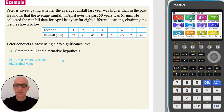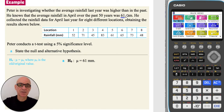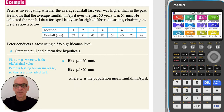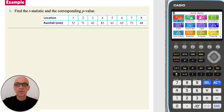When testing the mean of a population, the null hypothesis H0 is that the population mean is the original value — 61 millimeters, as stated in the question. As Peter is investigating whether the average rainfall last year was higher than in the past, he's testing for an increase, so this is a one-tail test. The alternative hypothesis H1 is that the population mean is greater than 61 millimeters.